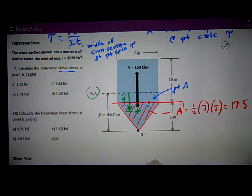So we just need to do some geometry. Y bar prime, the total distance from the neutral axis to this point B is 8.67 inches. From that...